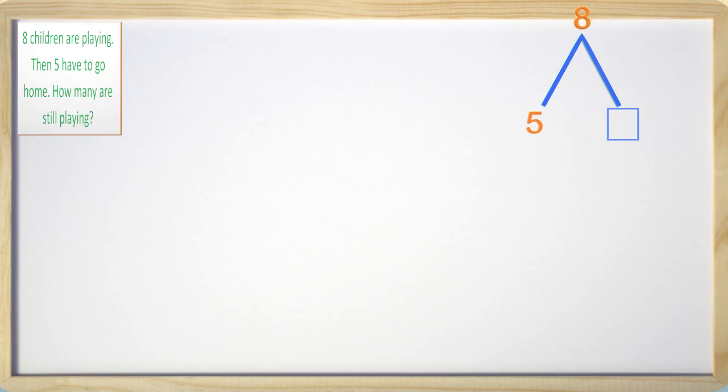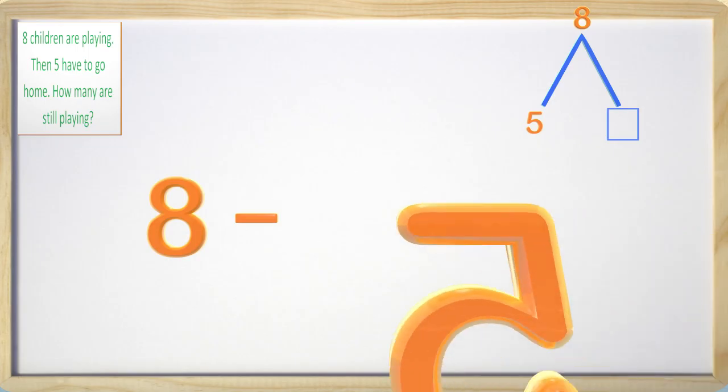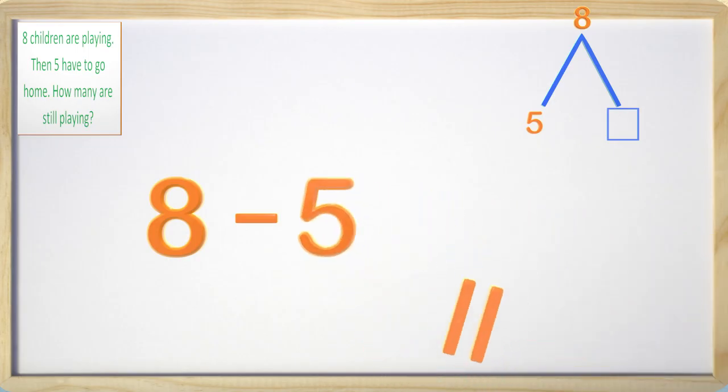We have eight kids that were playing, so we will write our total first because all good subtraction problems start with the total. Then I will put down the subtraction sign. Five of them had to go home, so we put down five. And now there are still some playing, but we do not know how many that is. What is eight take away five?